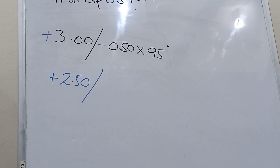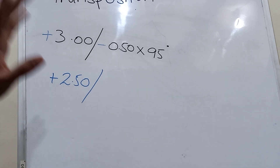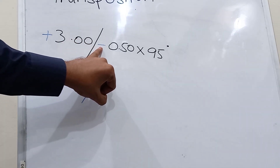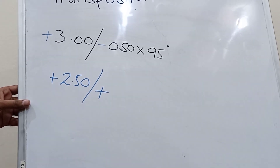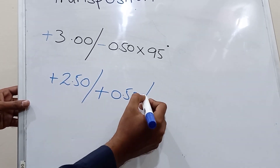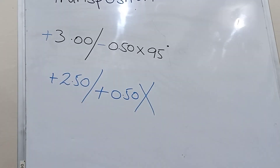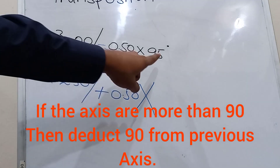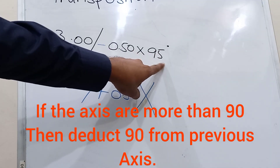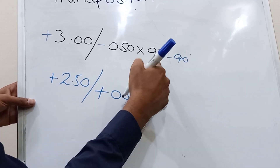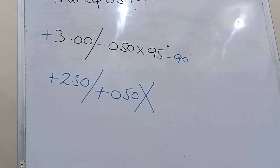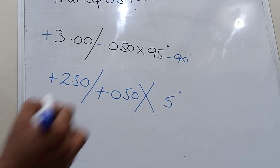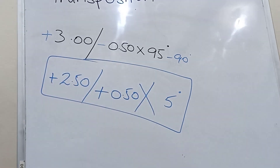The second step is to simply change the sign of the cylinder. The previous cylinder sign is minus, so we change it to plus; the value remains the same. For the axis: since the axis of 95 degrees is more than 90, we deduct 90 from the previous axis. 95 minus 90 gives a new axis of 5 degrees. This is the transposed toric prescription.